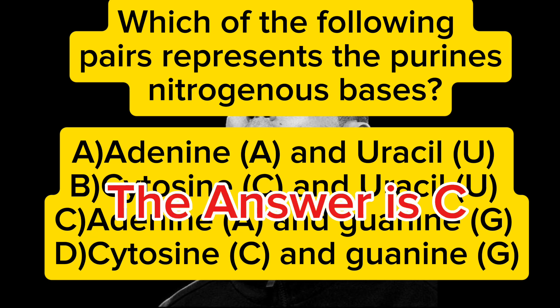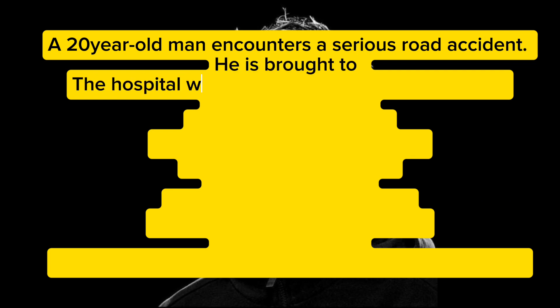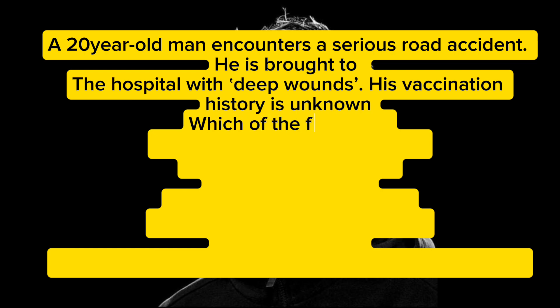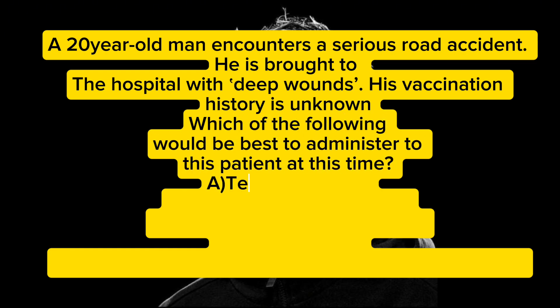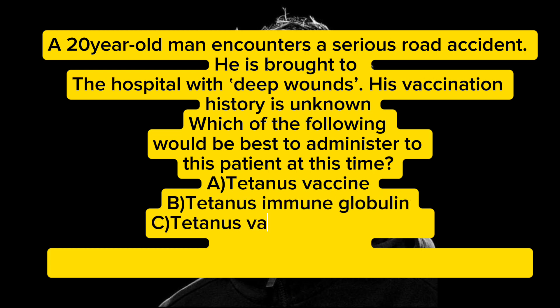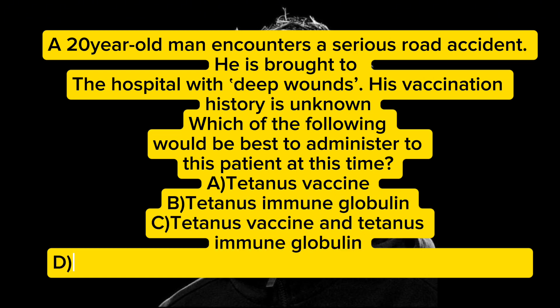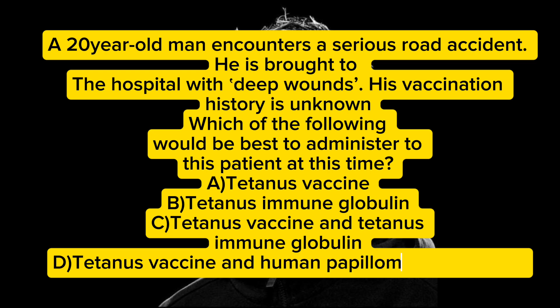A 20-year-old man encounters a serious road accident and is brought to the hospital with deep wounds. His vaccination history is unknown. Which of the following would be best to administer to this patient at this time? A) tetanus vaccine, B) tetanus immune globulin, C) tetanus vaccine and tetanus immune globulin, D) tetanus vaccine and human papillomavirus vaccine. The answer is C.